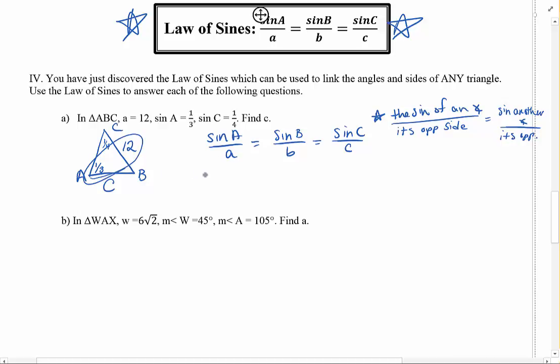So for here, there's an angle and its opposite side. So the sine of A, which is one-third, divided by A, equals the sine of C, which is one-fourth, divided by side C. Sine of A over A equals sine C over C. If you're a formula person, you just use the formula. Sine A goes on top, the side goes on the bottom. Sine C goes on top, side goes on the bottom. And now I have a proportion, so I'm going to cross multiply. So I get one-third C equals one-fourth times 12, which is 3. If I want to get rid of the one-third, I'm going to multiply by 3. C equals 9.